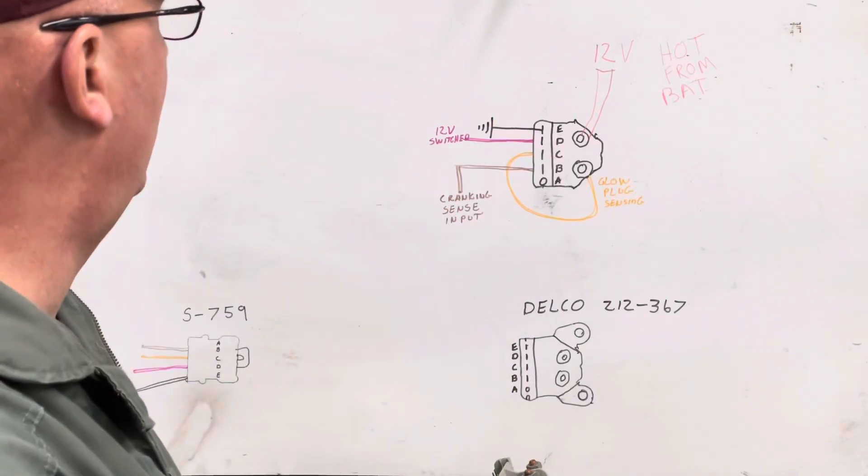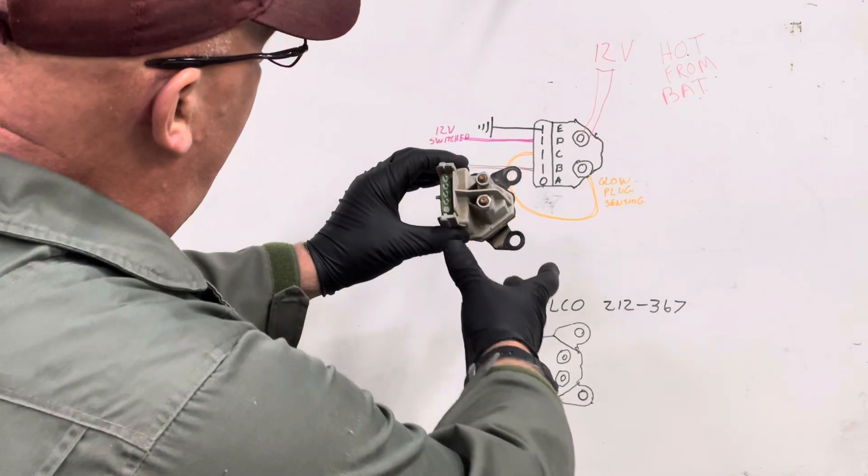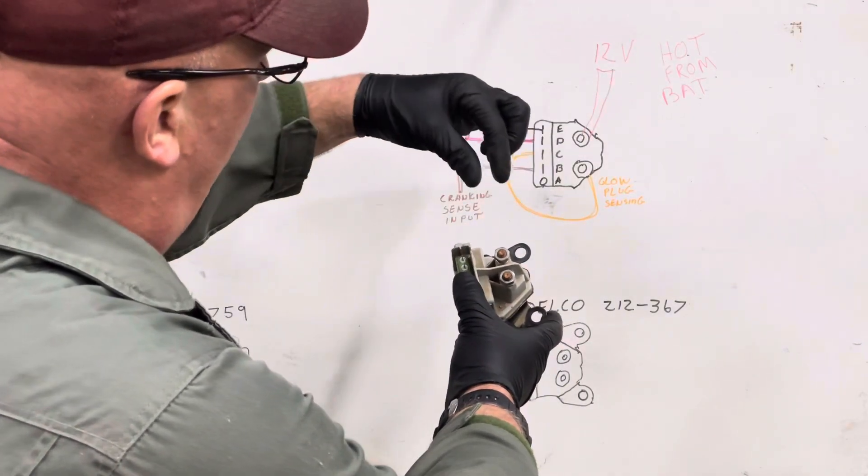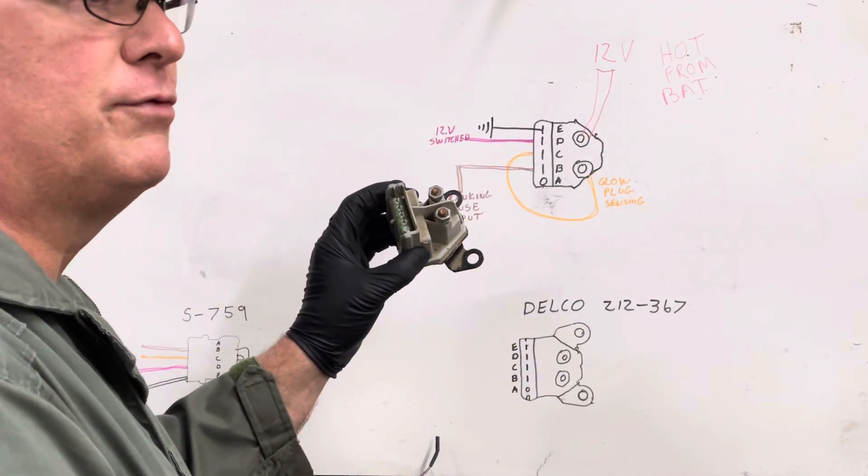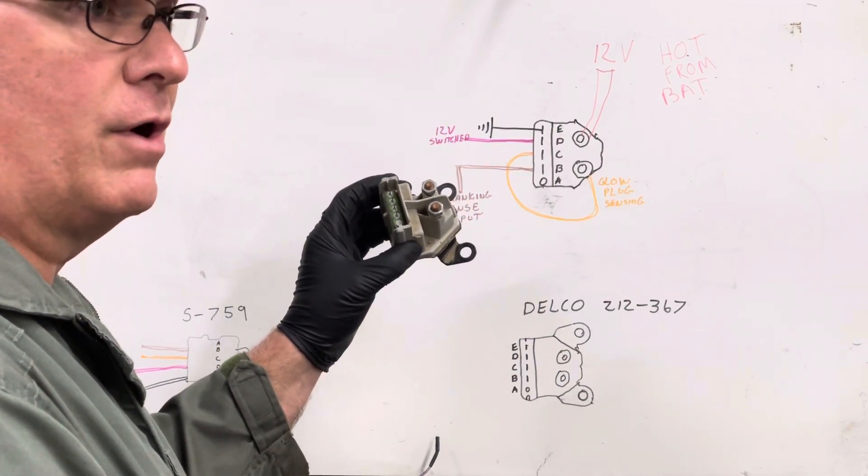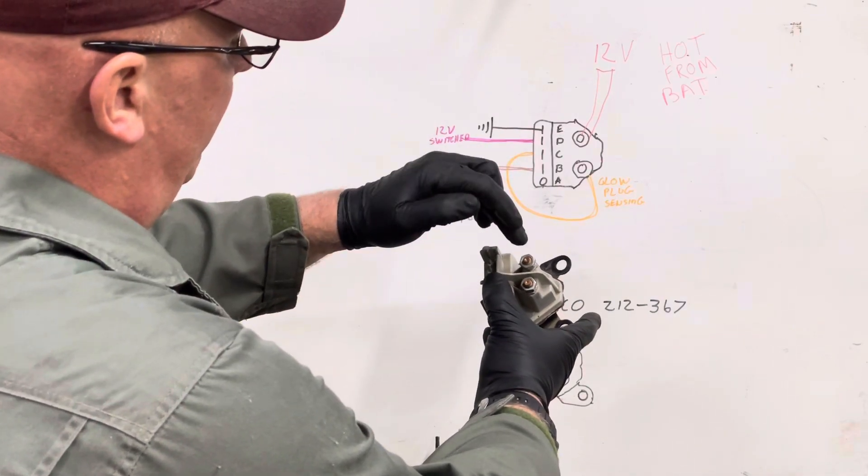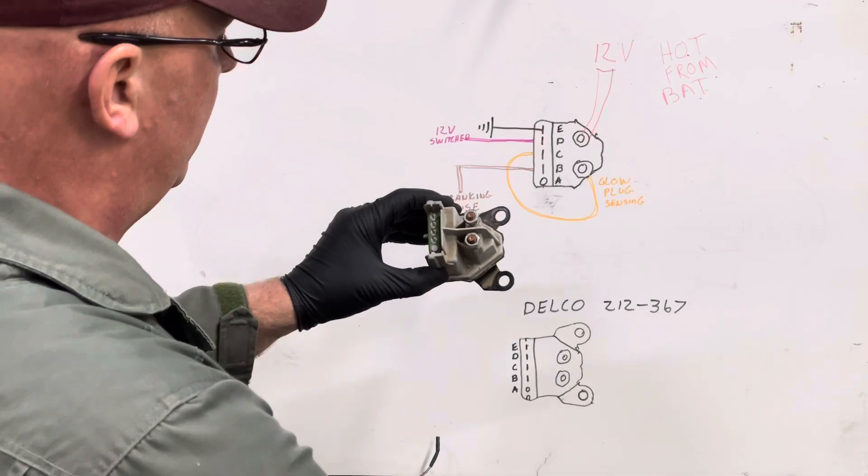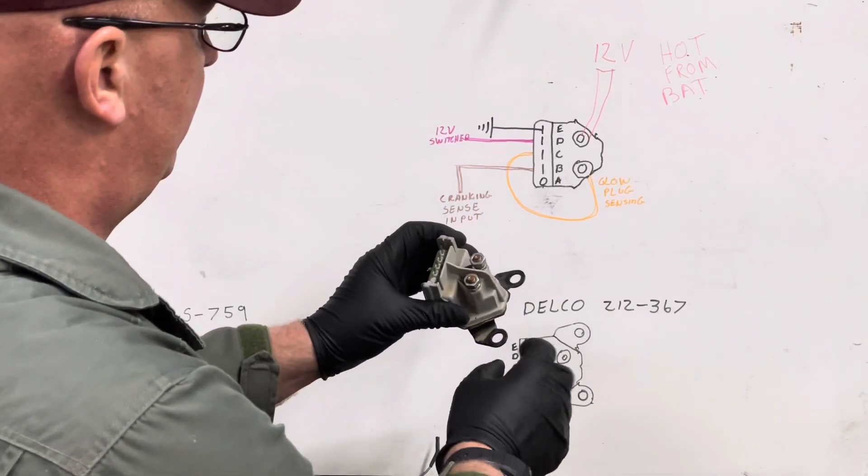If this lug here had 12 volts on it, I'm going to say use at least no smaller than four gauge wire, preferably a zero gauge or even a double one. You got that on this side, so this side the relay is hot. This side goes to your glow plugs. When this thing connects, that's the whole purpose of this unit, is to connect this and this together.